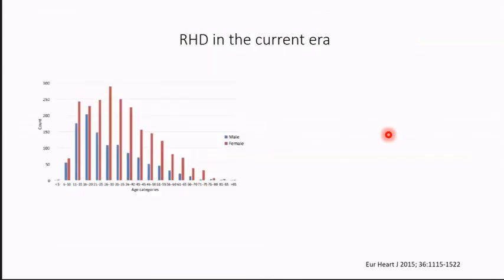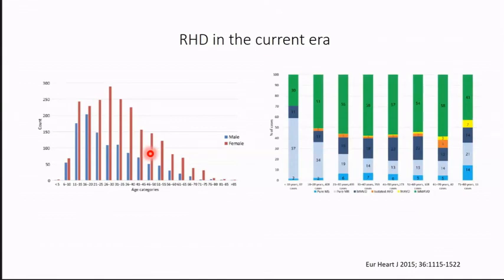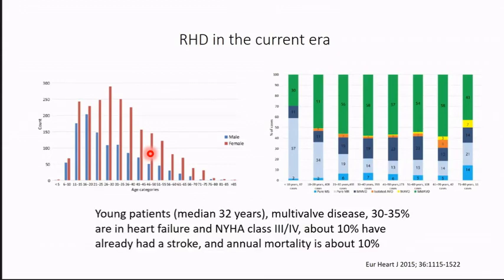But there were really no data when we started looking at rheumatic heart disease. We did a global registry of rheumatic heart disease along with Mungani and others in Africa. A snapshot shows that these are young patients, mostly female, with multivalve disease — green indicates both mitral and aortic valve involvement. They all die very quickly; the two-year mortality was about 20% in our REMEDY trial, and many have already had a stroke. This is a disease with a great degree of morbidity and mortality.